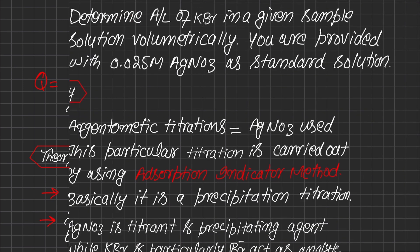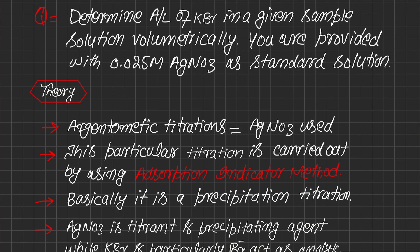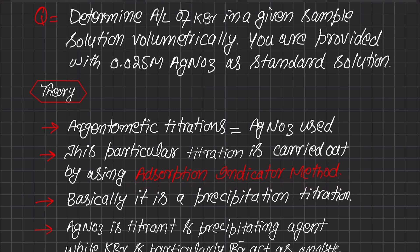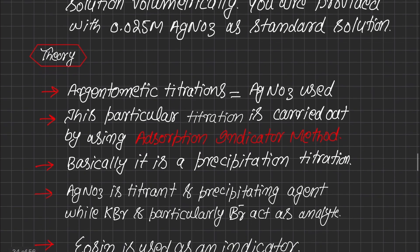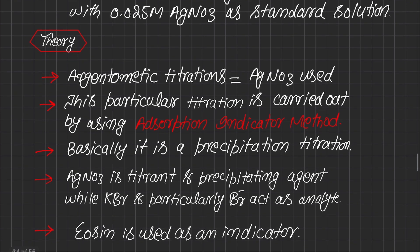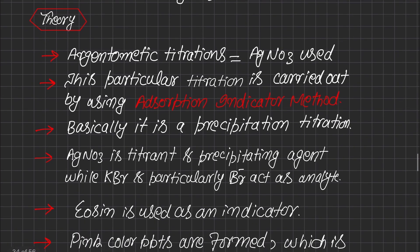Argentometric titrations can be performed by a number of methods, but in this particular titration we are adopting the adsorption indicator method. In this method, we use an indicator which is adsorbed on the surface of silver ions physically, and then it gives its color, which is the end point of this titration.